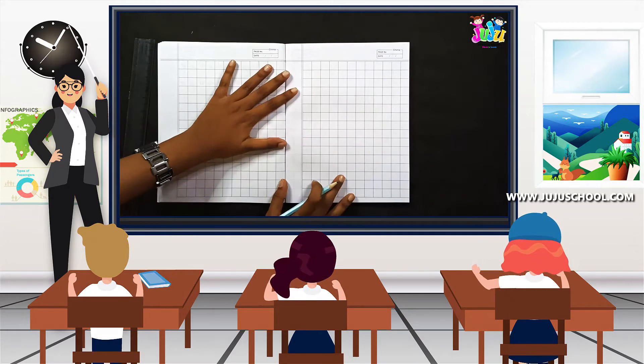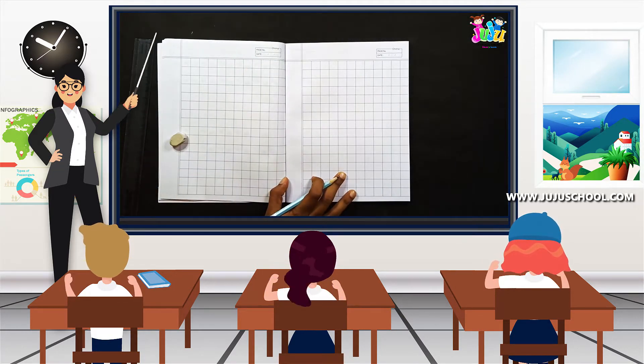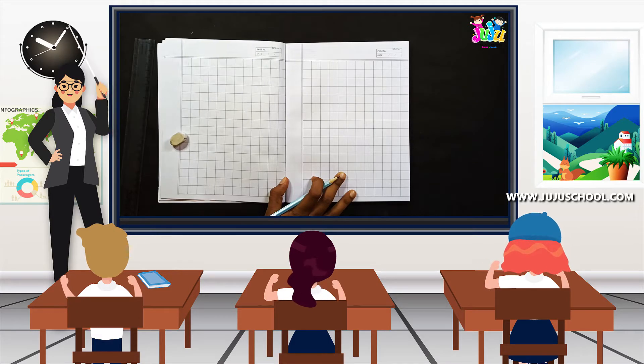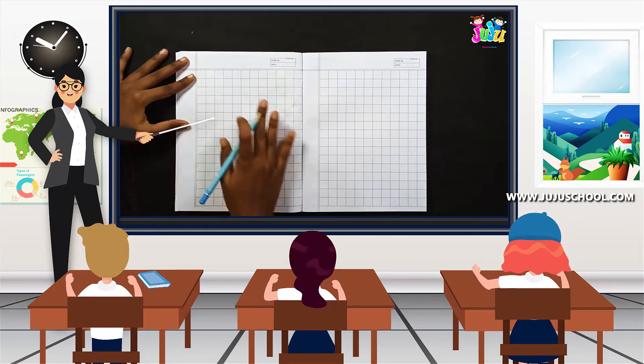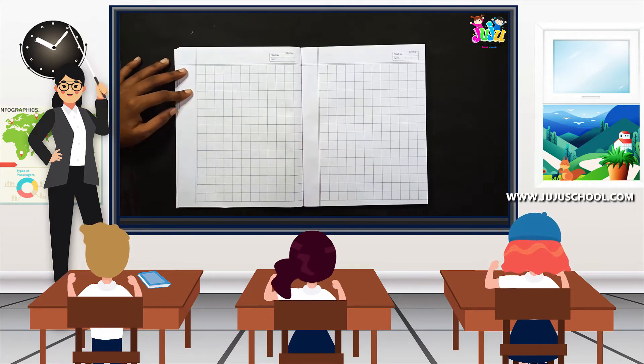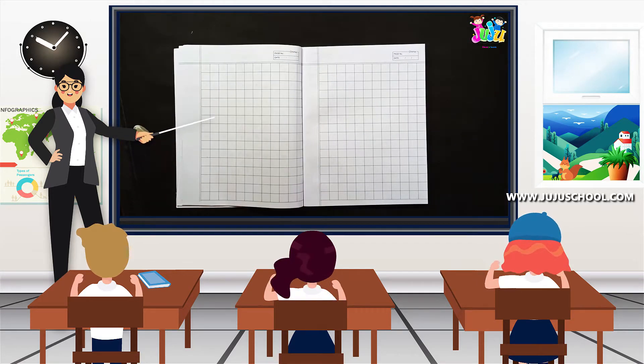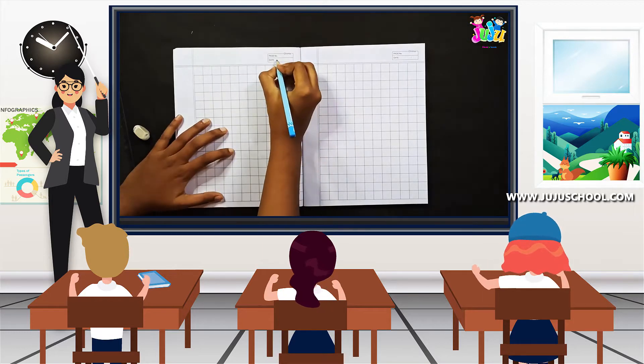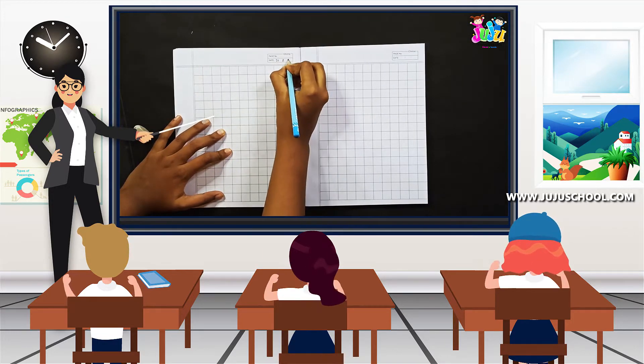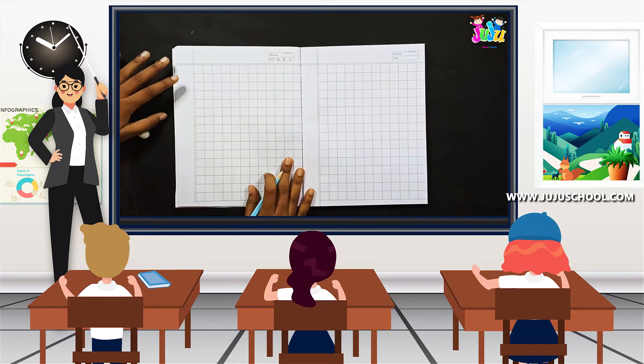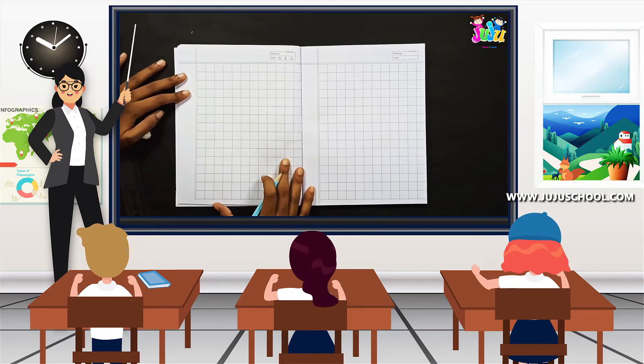So the very first thing you have to do is you have to write today's date. Is that clear? Yes? That's so good. So now take a fresh new page and write today's date. So today's date is 28 and again 20. So with the help of your parents you can write the date heading.